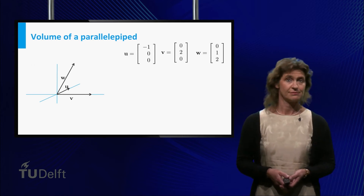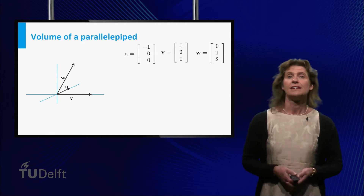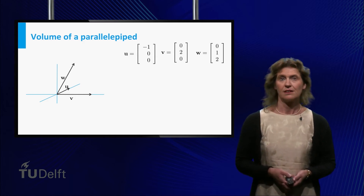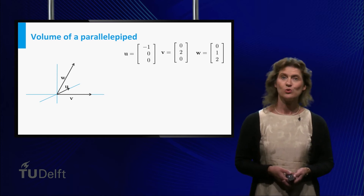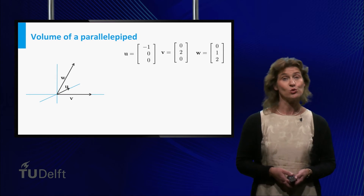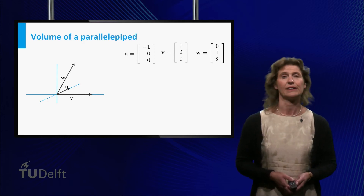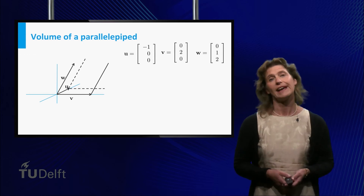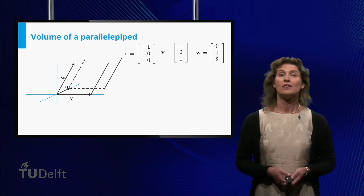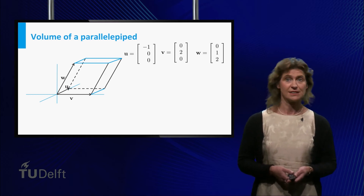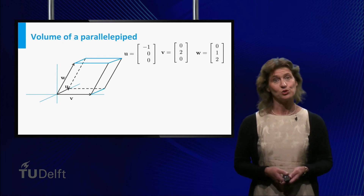You have seen a cube before, at least in real life in the form of a die. Typical for a cube is that its angles are all right angles and that it has six square faces. Let's now look at a more general three-dimensional object whose sides are six parallelograms — this is called a parallelepiped. You can construct it by using only three vectors. Take the three-dimensional vectors u, v, and w, and construct u plus v, u plus w, v plus w, and u plus v plus w. If you take the parallelepiped spanned by the standard basis vectors i, j, and k, you get the unit cube.